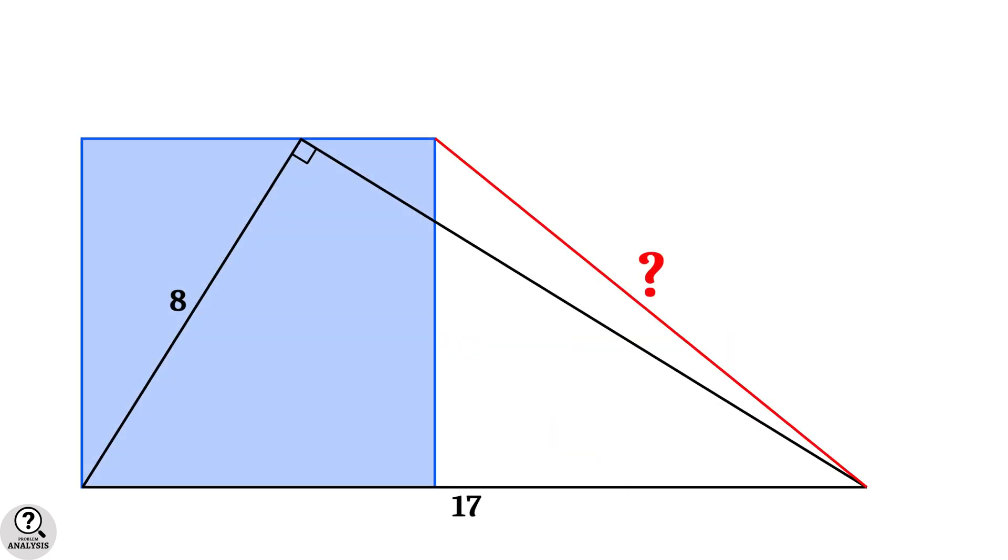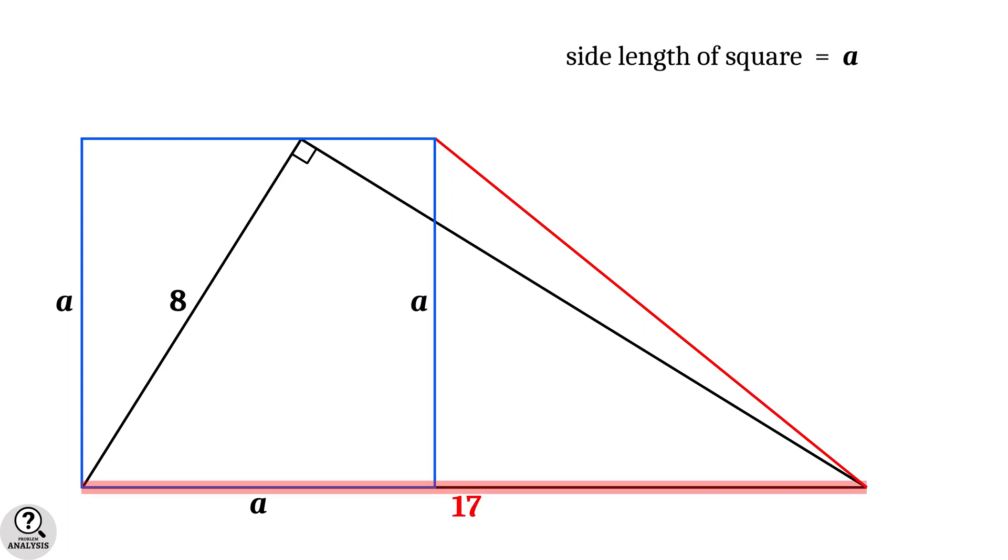Now, observe the figure. Suppose the side length of the square is A. Then these two sides are also equal to A. Then this part will be equal to hypotenuse of the right triangle, that is 17, minus side length of the square, which is A. That is, the required length is equal to 17 minus A.